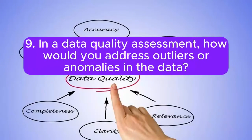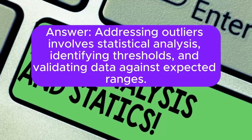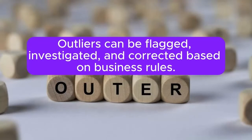9. In a data quality assessment, how would you address outliers or anomalies in the data? Answer: Addressing outliers involves statistical analysis, identifying thresholds, and validating data against expected ranges. Outliers can be flagged, investigated, and corrected based on business rules.